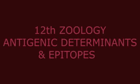Soluble antigens include toxins, proteins, carbohydrates, glycoproteins, and lipoproteins — substances produced by these organisms are soluble antigens. The entire cell is particulate, while the cell's secretions, products, or constituent substances are soluble. Bacterial toxin is the best example of a soluble antigen; the bacterial cell itself is an example of a particulate antigen.